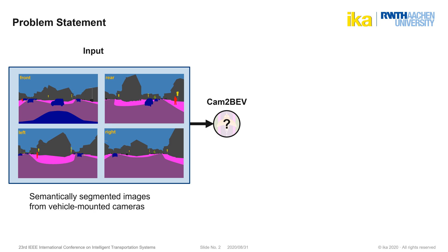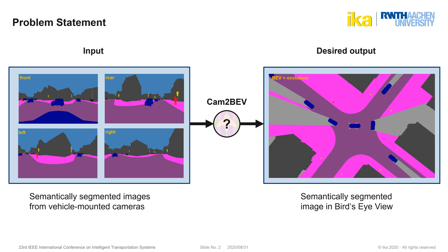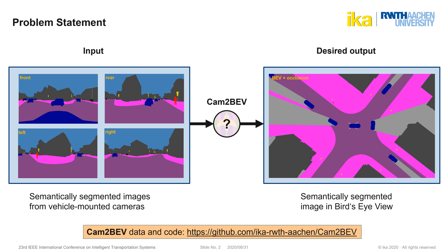Let's take a look at the problem statement. The input to our approach, which we call CAM to BEV, are semantically segmented camera images from a vehicle. We analyzed a four-camera and a single-camera sensor setup, but in general any number of cameras would be possible. We assume there already exist models which can produce a semantic segmentation of a camera image. CAM to BEV transforms the input images to a bird's-eye view image which is semantically segmented as well, and introduces a class for occluded areas, since not all areas in the BEV image are visible in the camera images. The data and code are available on our GitHub page and will allow you to reproduce all the results of our paper.